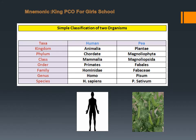Now let's see the classification of human and pea. For humans: kingdom Animalia, because organisms able to move on their own are included in kingdom Animalia. Then phylum Chordata — chordates are organisms with a proper backbone and proper spinal cord.